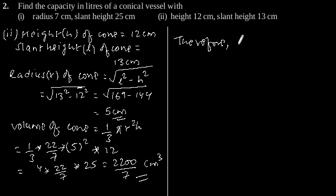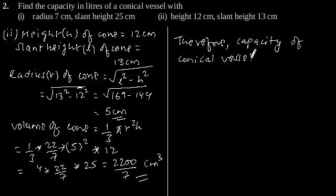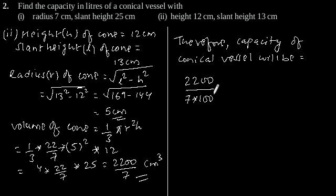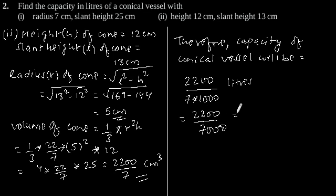Capacity of conical vessel will be 2200/7 divided by 1000 liters, since 1 liter is equal to 1000 cubic centimeters. This gives 2200/7000, which equals 11/35 liters, which is our answer.